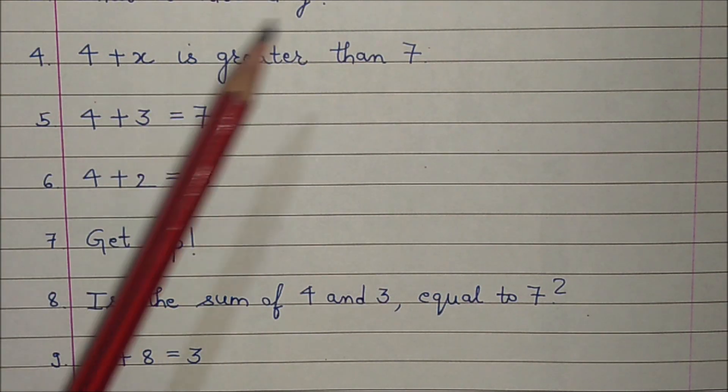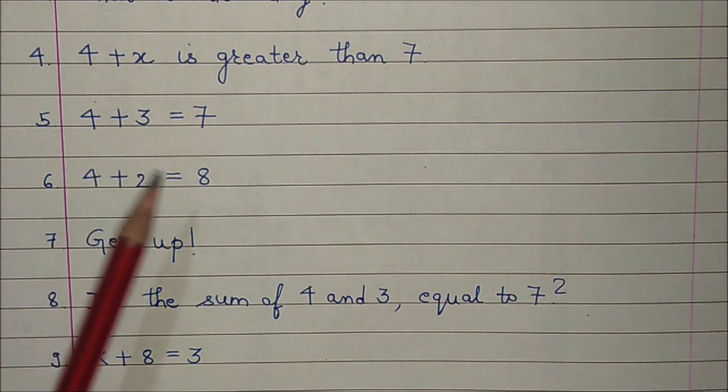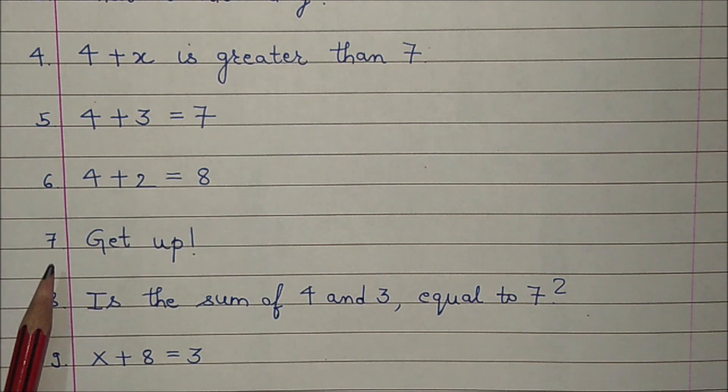Number 4: 4 plus x is greater than 7. Number 5: 4 plus 3 is equal to 7. Number 6: 4 plus 2 is equal to 8. Number 7: Get up. Number 8: Is the sum of 4 and 3 equal to 7?